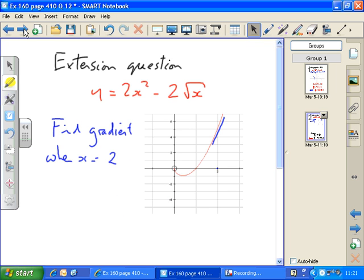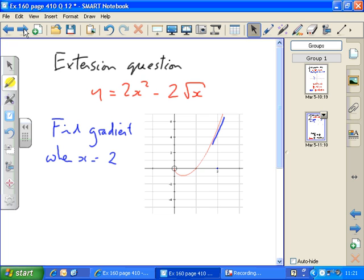Now we've got the extension question. There is another function, again plotted. This is a bit more complex. This function has got a square root inside it. We have to find the gradient when x equals 2.